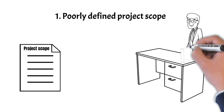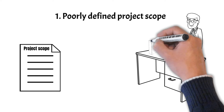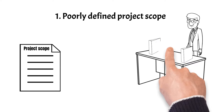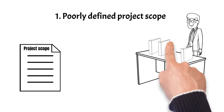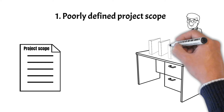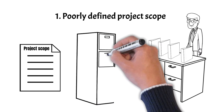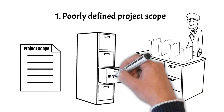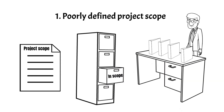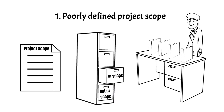Scope creep refers to the uncontrolled expansion of the project scope, which can have a severe impact on project timelines, budgets, and overall success. To avoid this pitfall, take the time to thoroughly define the project scope, involve key stakeholders in the process, and set realistic boundaries for the project from the outset. Establishing a proper change management process will help as well.